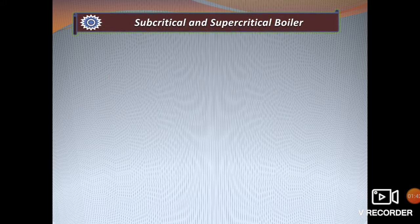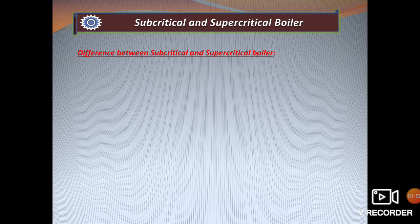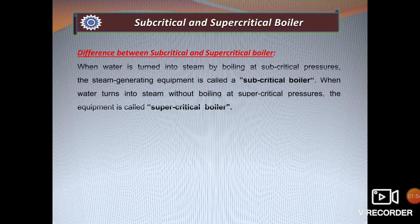The device which generates steam is called a boiler, but this boiler can be either a subcritical boiler or a supercritical boiler. When water is turned into steam by boiling at subcritical pressure, the steam generating equipment is called a subcritical boiler. When water turns into steam without boiling at supercritical pressure, the equipment is called a supercritical boiler.